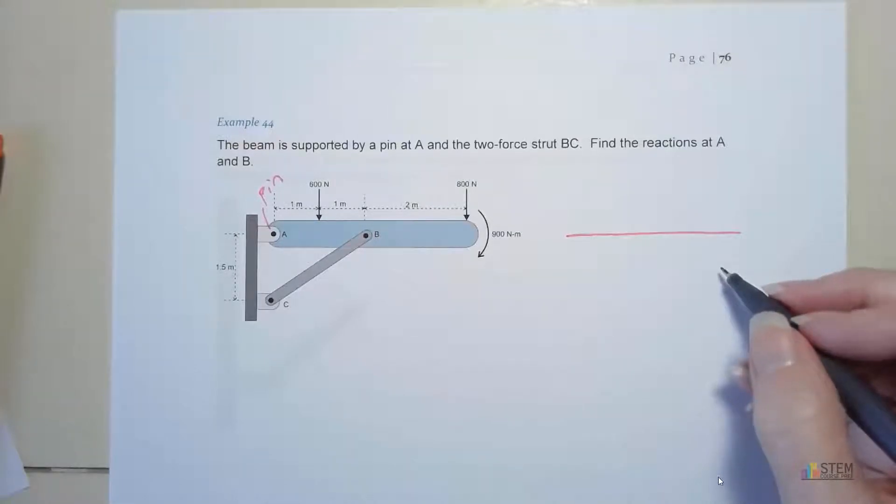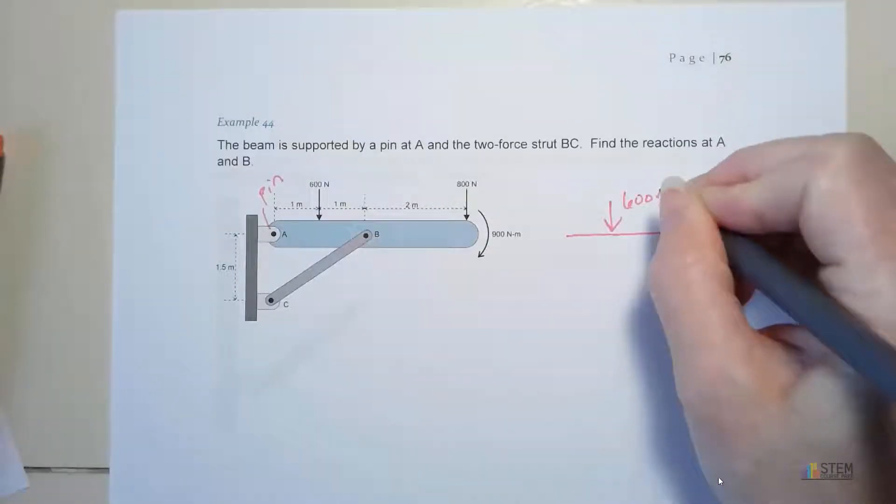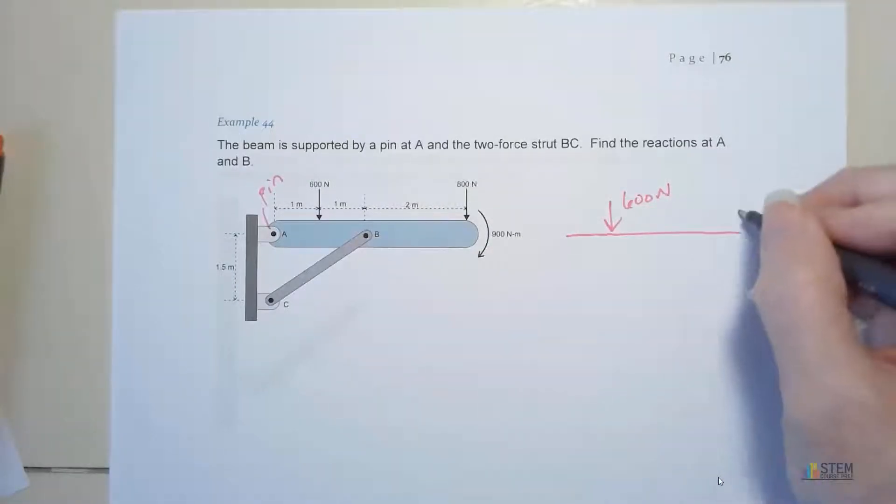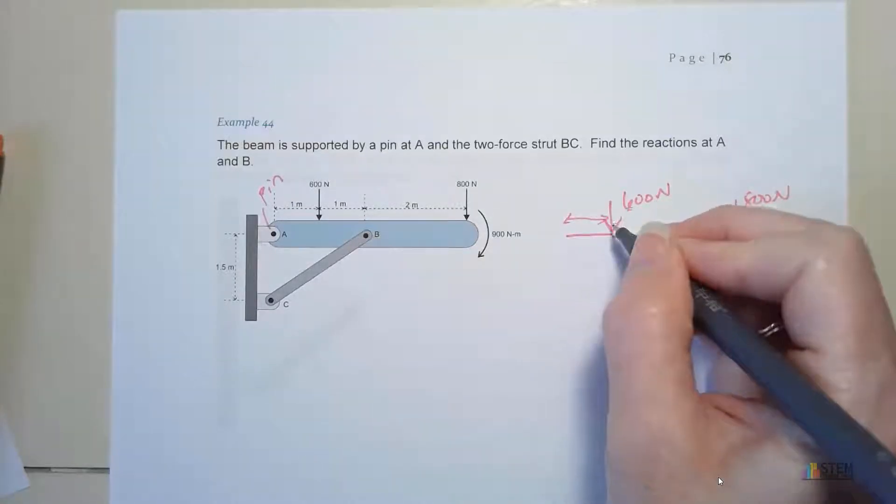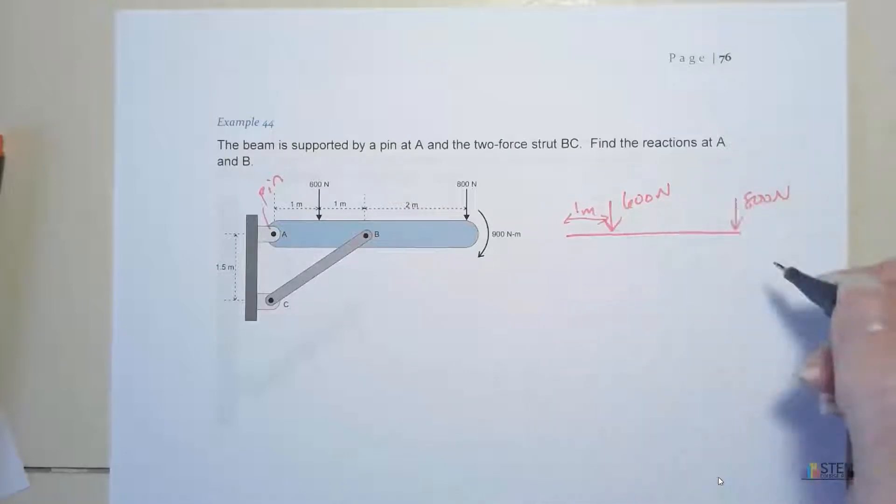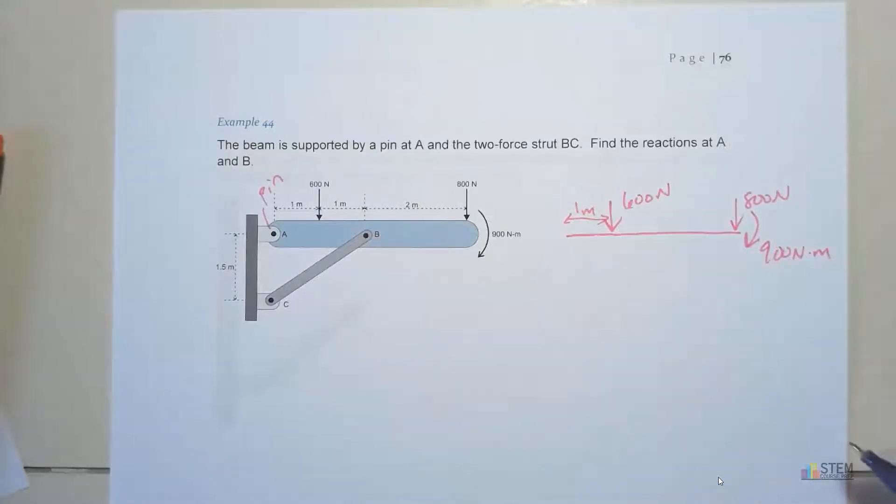We want to draw our free-body diagram first. It's always our first step, so I'm just going to draw a line that represents this blue bar right here, or beam, whatever you want to call it. Now let's go ahead and draw the forces that we know on here. We have this 600-Newton force, so that one's easy. Then we've got 800 Newtons over here.